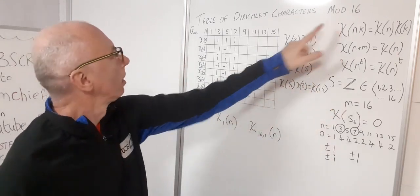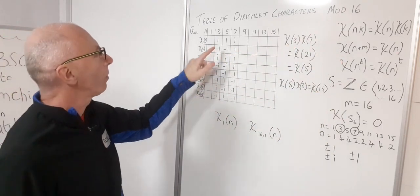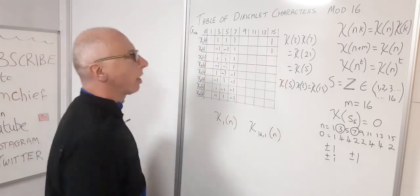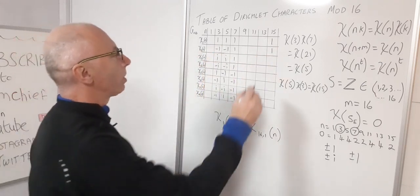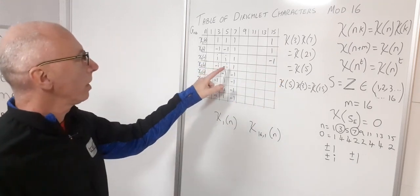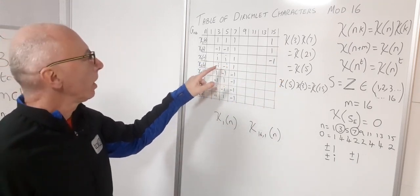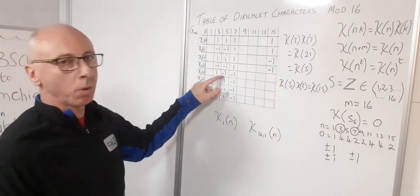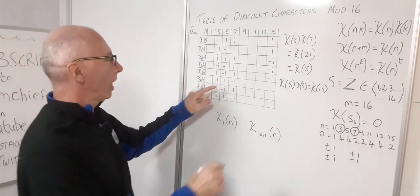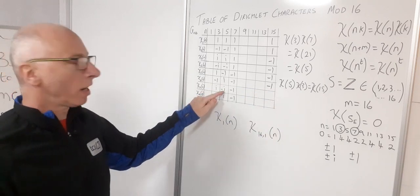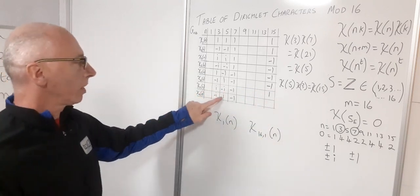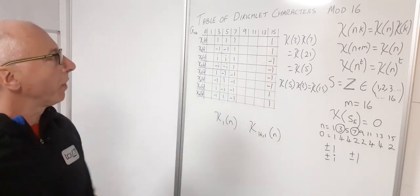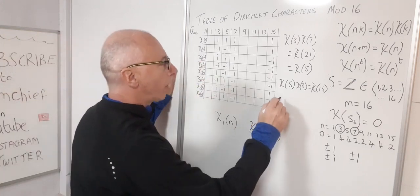Now using chi(5)×chi(3) = chi(15), I compute the chi(15) column. Multiplying element-wise: 1×1=1, (−1)(−1)=1, i×i=i²=−1, (−i)(−i)=−1, 1×(−1)=−1, (−1)(1)=−1, (−i)(−i) gives +1 wait — working through: results are 1, 1, −1, −1, −1, −1, 1, 1.